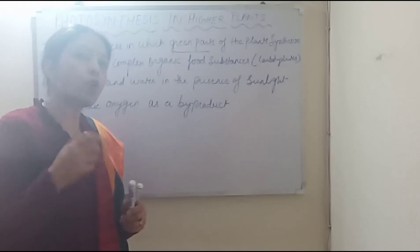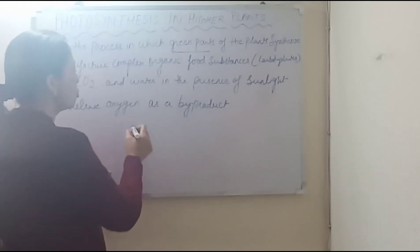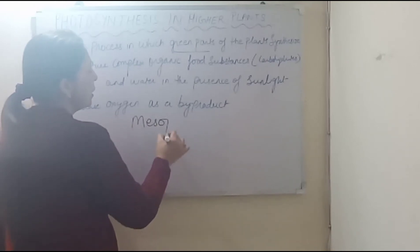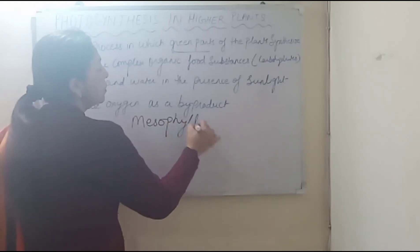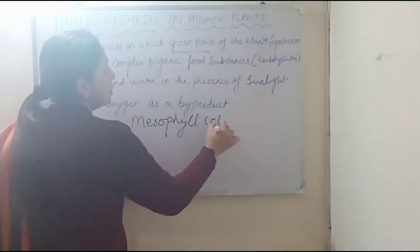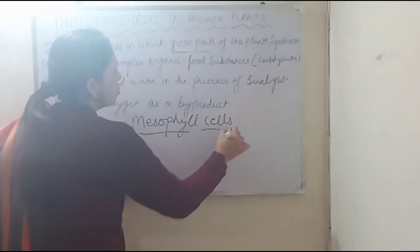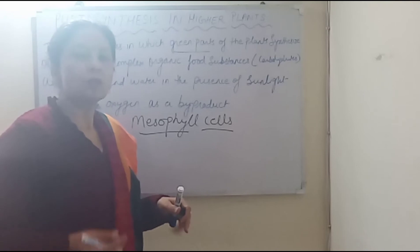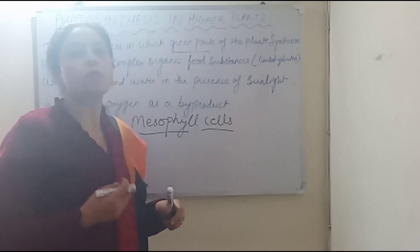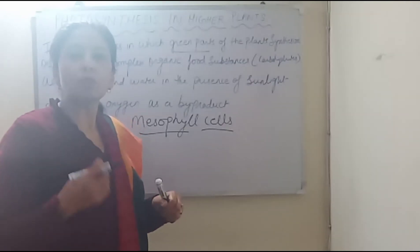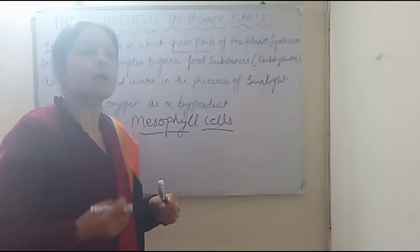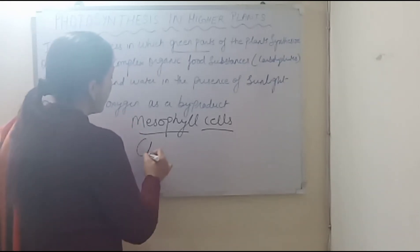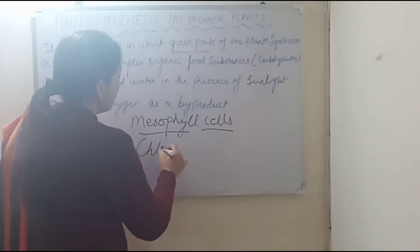Now, especially, in which cells does photosynthesis occur? These cells are called mesophyll cells, which carry out photosynthesis. And what organelle is present in these cells? It is called the chloroplast.